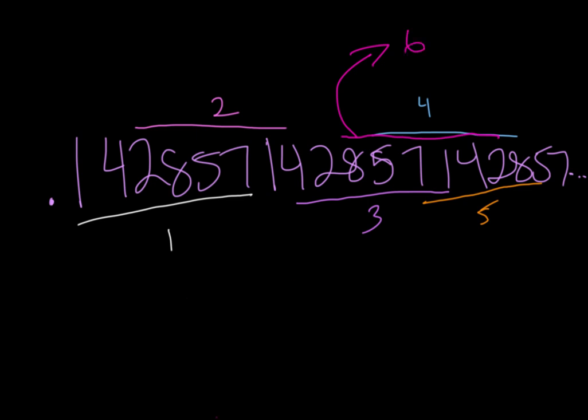So again, the way to think about it is, all you need to remember is that string of numbers, 1, 4, 2, 8, 5, 7. And then, with any numerator in the sevenths, you just find the number in your string of numbers that corresponds to that numerator, based on the least to greatest order.